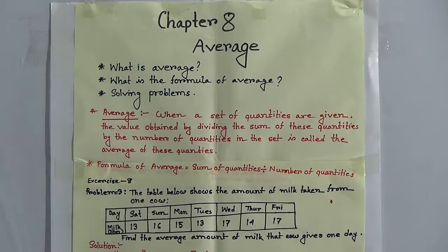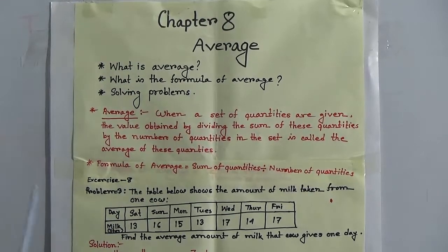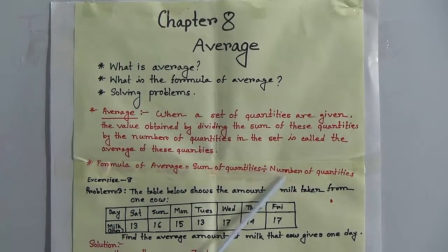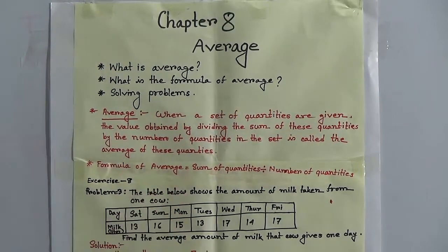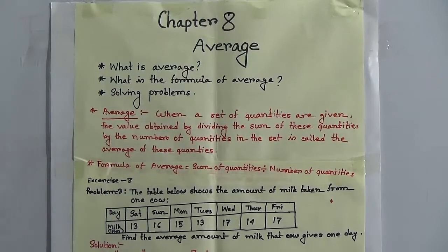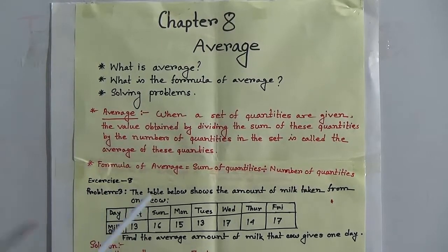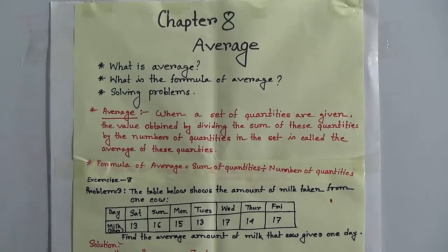Suppose the sum of quantities is given. Then first we add the quantities and find out the number of quantities. Then we find the average by dividing the sum of quantities by the number of quantities. If the average and number of quantities are given and we need to find the sum of quantities, we multiply average by the number of quantities to get the sum.